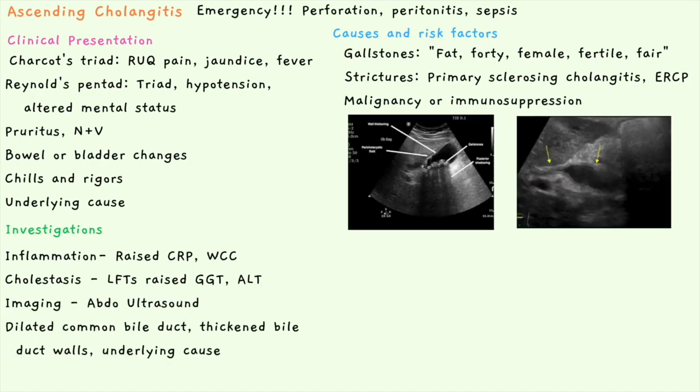Imaging includes an abdominal ultrasound where you may be able to visualize gallstones as shown on the left and ascending cholangitis itself as shown on the right. You may also see signs of the underlying cause such as a dilated common bile duct, thickened bile duct walls — a dilated common bile duct is common with gallstones or pancreatic cancer.